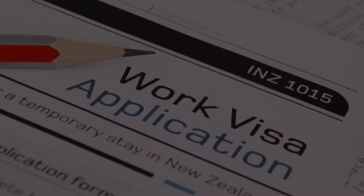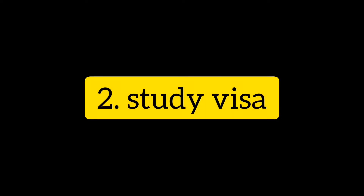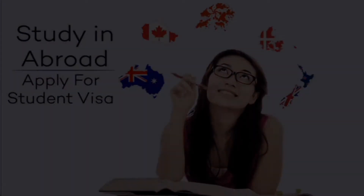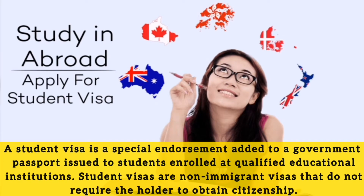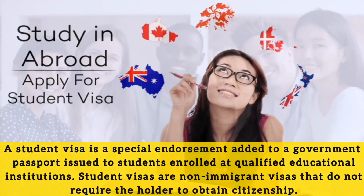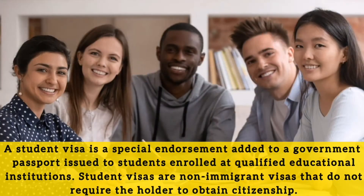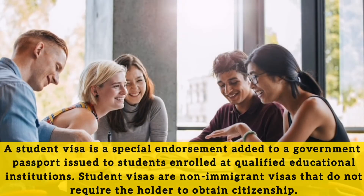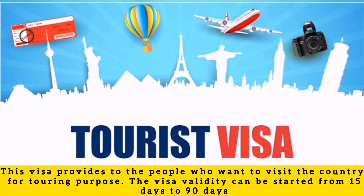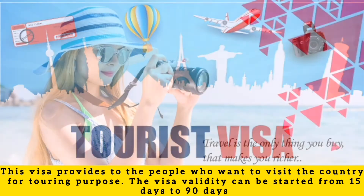Number two: study visa. A student visa is a special endorsement added to a government passport, issued to students enrolled at qualified educational institutions. Student visas are non-immigrant visas that do not require the holder to obtain citizenship. Number three: tourist visa. This visa is provided to people who want to visit a country for touring purposes.